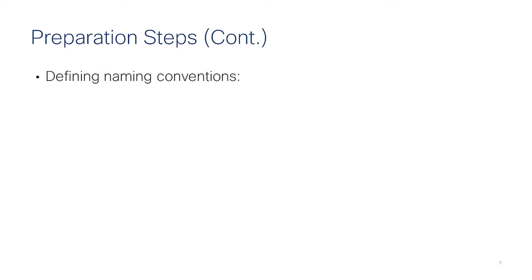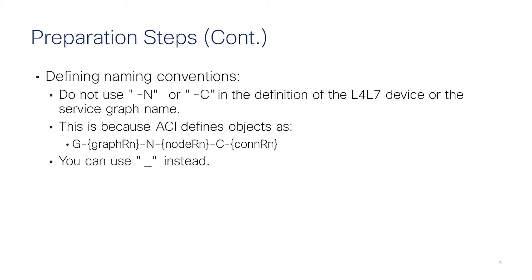You need to define naming conventions. Although the ACI object model is flexible enough to accept many different kinds of names, for service graph purposes you should avoid using dash-N and dash-C. If you need to concatenate different terms in the name, use underscore instead of dash.